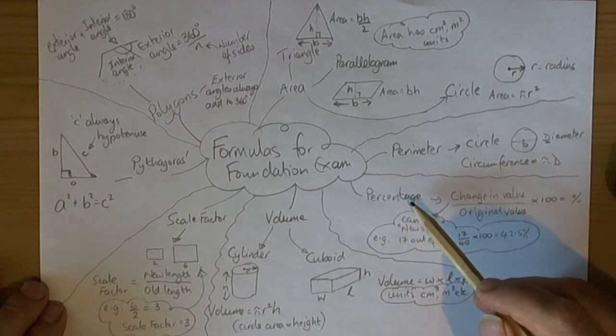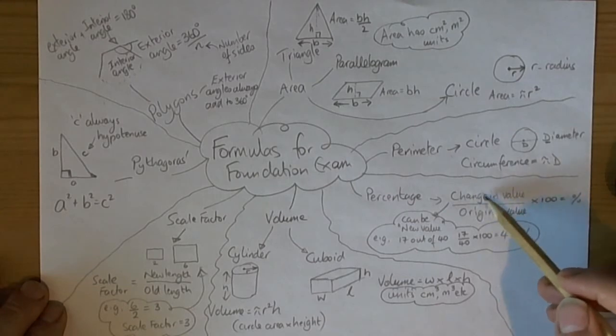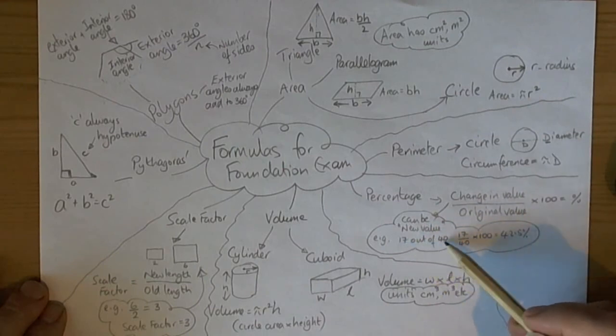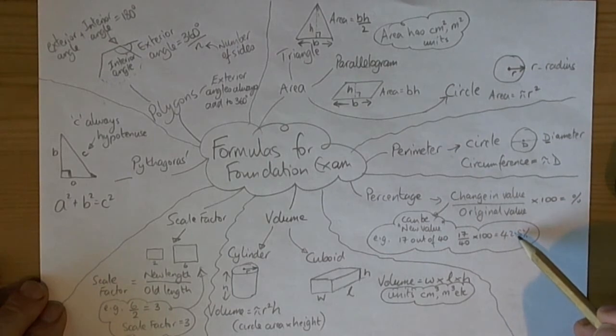For percentage, some questions ask you to write one number as a percentage of another. You look for a change in value—if there's been a change in price, divide by the original value and times 100. It can simply be like the classic 17 out of 40 on tests. You'll write the fraction first and then times by 100 to get the percentage.